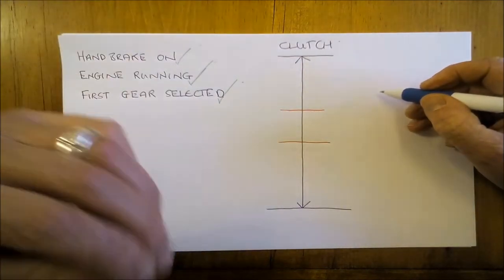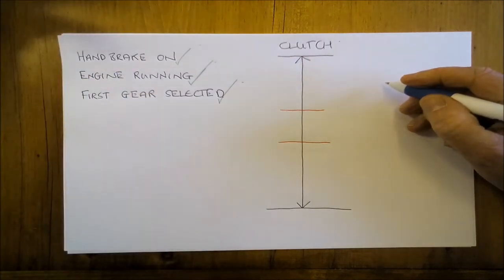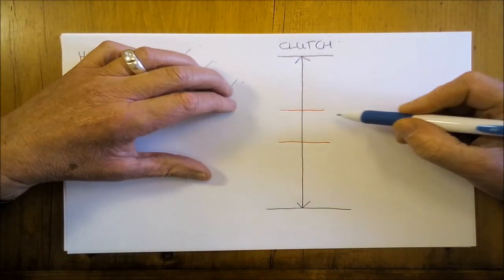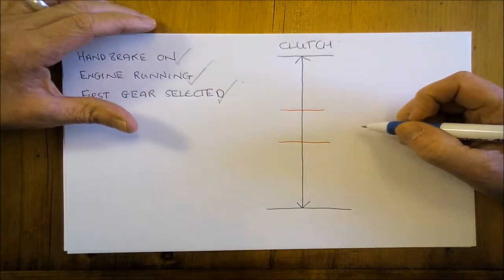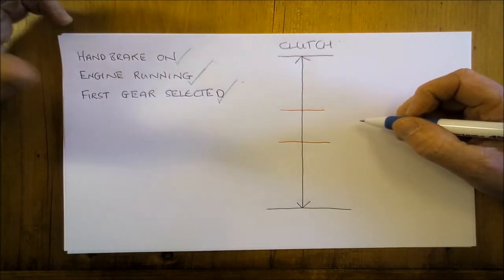Now it's normally referred to as the biting point, but really it's got a range to it, so it's useful to refer to it as the biting range if you like.